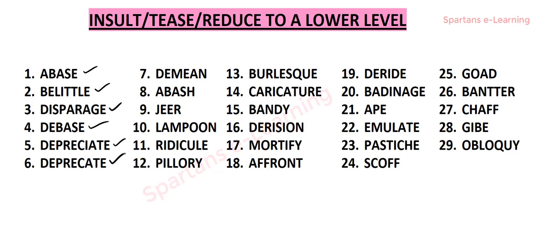Our next word is deprecate. Deprecate is a verb meaning to express disapproval of, to protest against, or to belittle. If you don't like something, you generally tend to oppose it with a negative opinion, treating the other as very lower to your status or not up to your taste. With that intention, if you oppose something, that is called deprecate — so deprecate means to express disapproval of or to protest against.